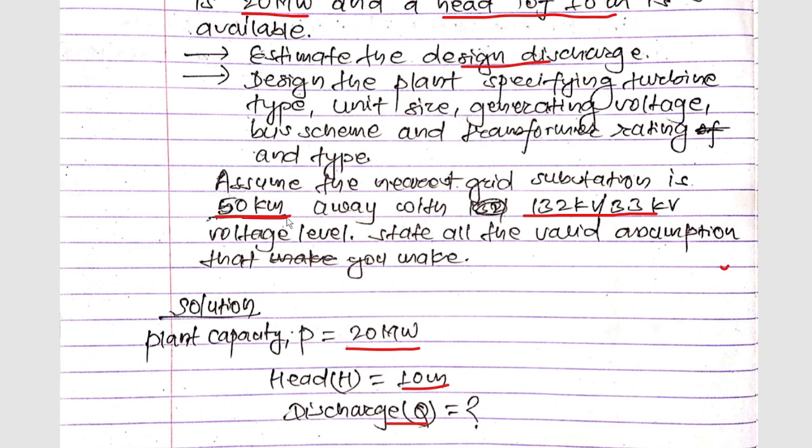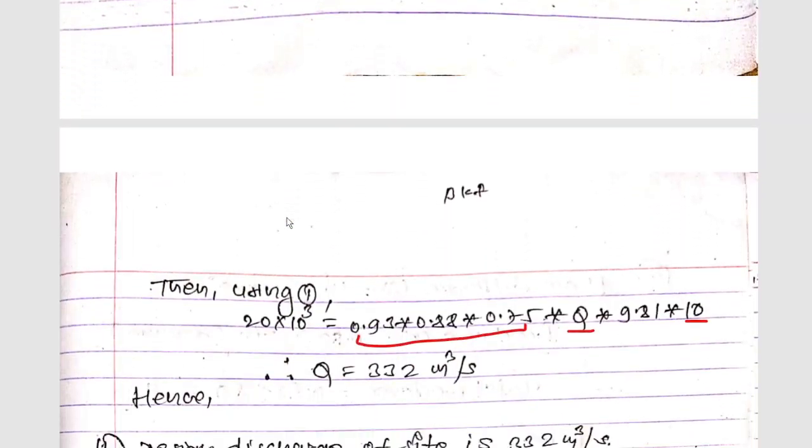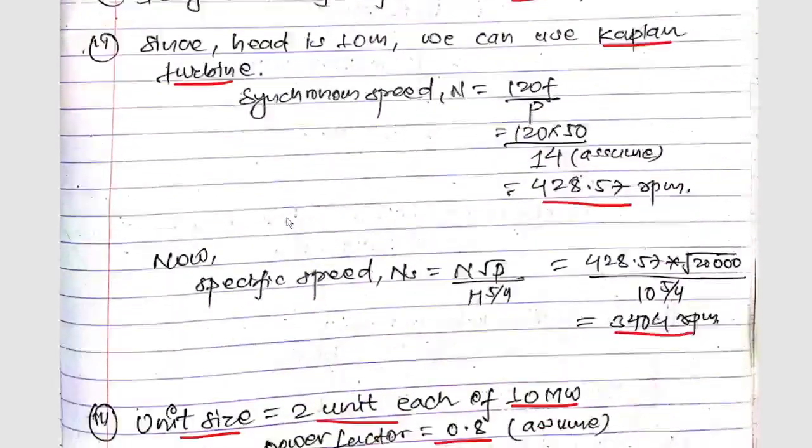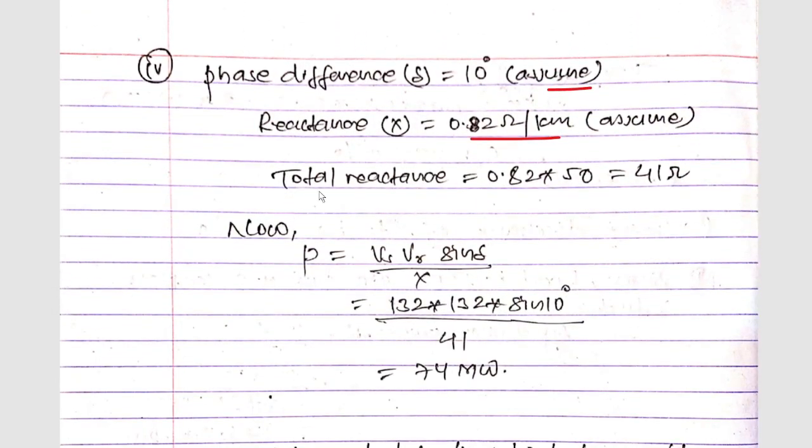The reactance is 0.82 ohm per km, and the distance is 50 km, so 0.82 × 50 = 41 ohms. The power P = Vs × Vr × sin(δ) / X.